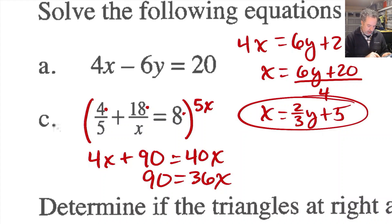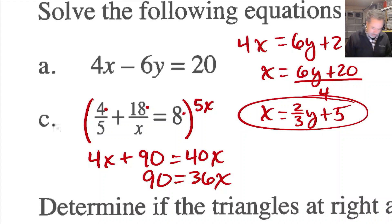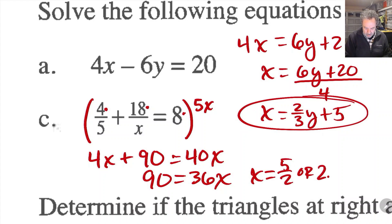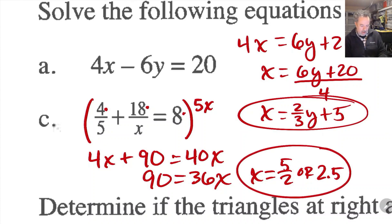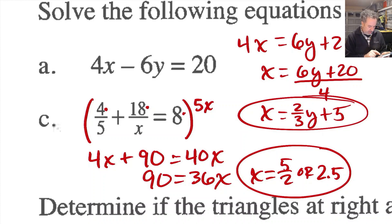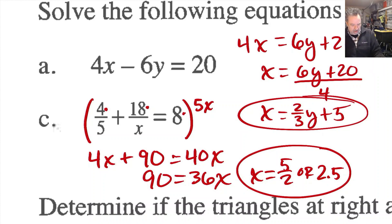If I take away 4x from both sides, I get 90 equals 36x. Dividing both sides by 36 gives 90 over 36, which is 5 halves or 2.5. So x equals 2.5. Checking: 4 fifths plus 18 divided by 2.5 should equal 8, and it does. That's definitely the solution.